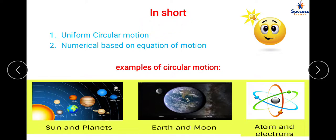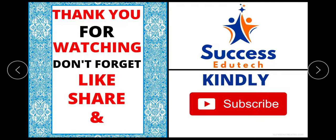In summary, uniform circular motion is motion along a circular trajectory with constant speed but with continuous change in direction, causing continuous change in velocity — hence it is called accelerated motion. Please go through all the examples, solve them with pen and paper, and share more examples of uniform circular motion as homework in the comment section. Thank you for watching — don't forget to like, share, and subscribe. In the next lecture we will proceed further with other topics of laws of motion.